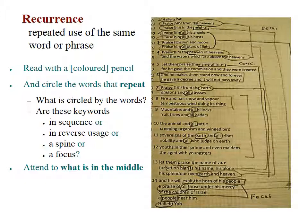Recurrence is the repeated use of words from the same root, and it is the main subject of the book Seeing the Psalter. Rabbi Meganeh instructs us to read with a colored pencil — or at least a pencil — and he says: circle the words that repeat. Are these words in sequence, or in reverse usage, or are they a spine or a focus for the poem? Then pay attention to what is in the middle — what is surrounded by the recurring words?